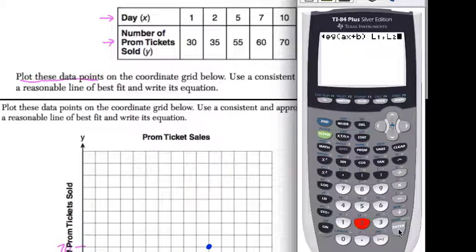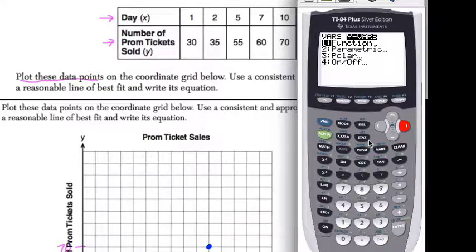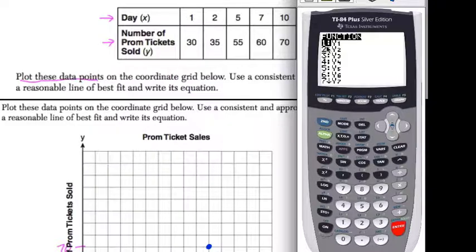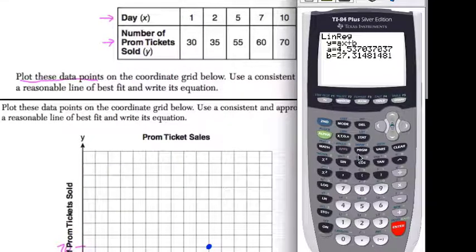Now it's going to ask what linear regression you want to use. I want to do the linear regression for those two lists I set up. Hit second, list, select List 1. There's L1, comma, second, STAT for List 2. Hit 2, then comma.